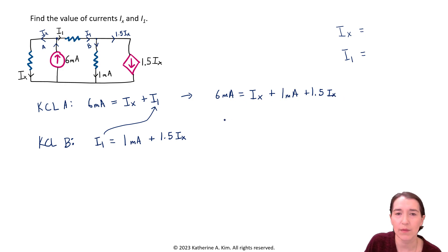Move minus one milliamp, we're going to have five milliamps here. And we're going to have one plus 1.5, which is 2.5 IX. And this is just a scalar, so there's no units here. We're going to divide by 2.5. Now we're going to get IX is equal to just two, two milliamps.